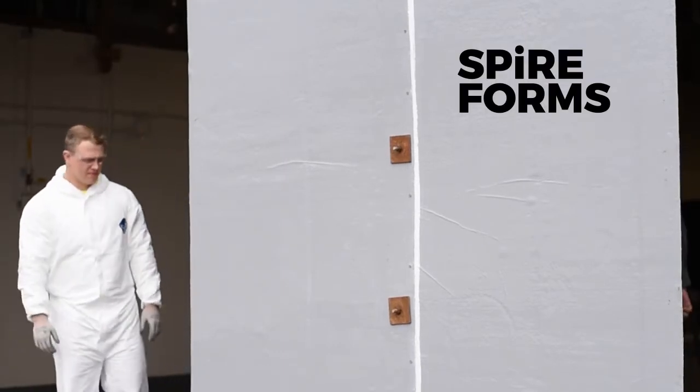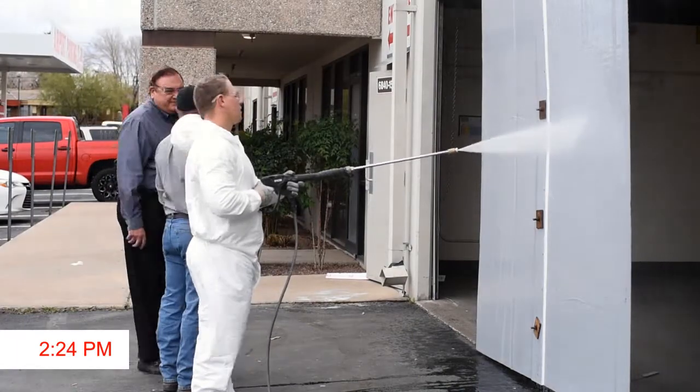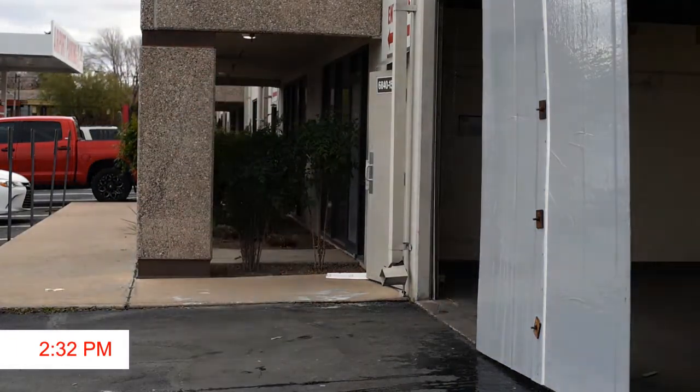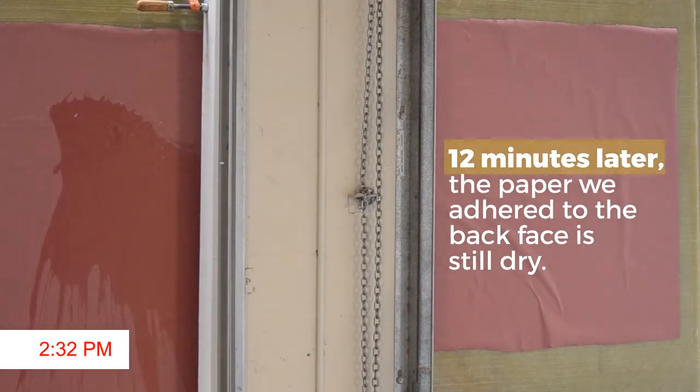Here, engineers demonstrate the spire form's impermeability to water on a sample section of form designed for seawall reinforcement. The section does not allow water through even when subjected to pressures that far exceed the forces the structure will be exposed to.